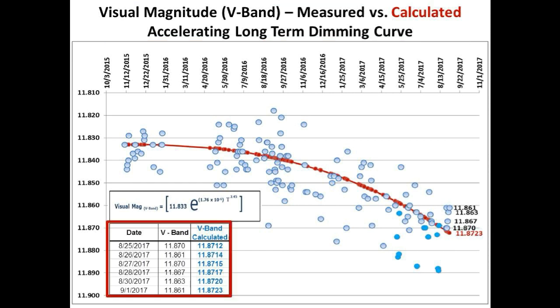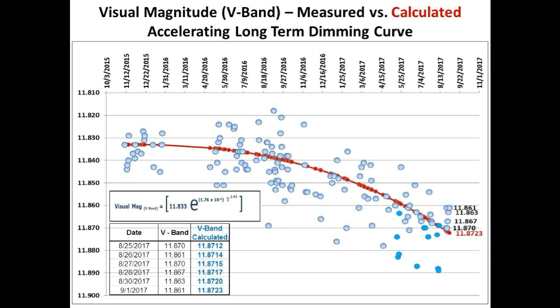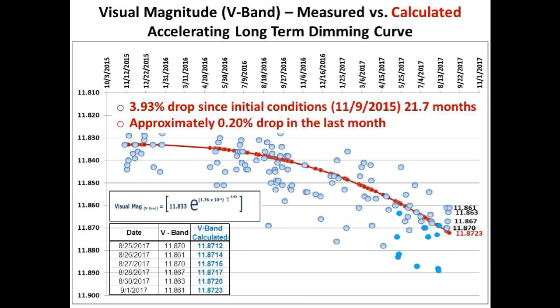Highlighted in red is the new data to add to this scatter plot, which is circled in red. Notice that the newest data points, which are in black, are riding higher than the red calculated value. We are not sure why these are higher, especially considering that we are currently in a shallow dimming event, but as you can see the scatter plot is variable and we will continue to track this actual data against our predicted and calculated curve. One last thing: the long-term dimming has dropped 3.93 percent in 21.7 months, and dropped approximately 0.2 percent in the last month. Well guys, that's all we have — have a great weekend, take care, and we will see you in our next video.